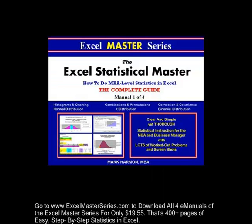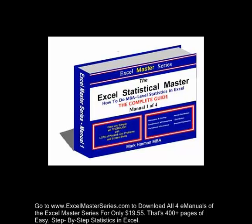So that right there is conjoint analysis using dummy variable regression in Excel. If you'd like to become an Excel statistical master, take a look at the Excel master series at www.excelmastereries for $19.95. You can get this four manual series, 400 plus pages of easy to follow, step-by-step statistics in Excel to become an Excel statistical master. Thank you very much and goodbye.